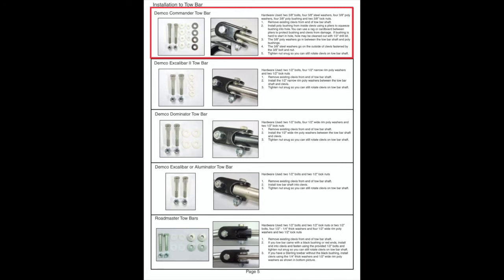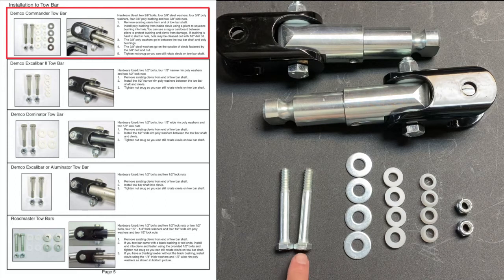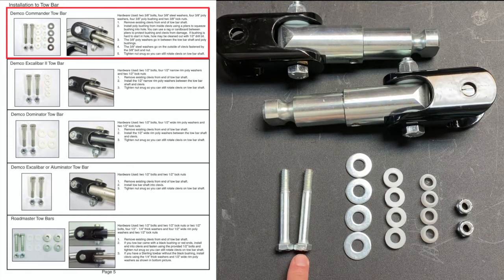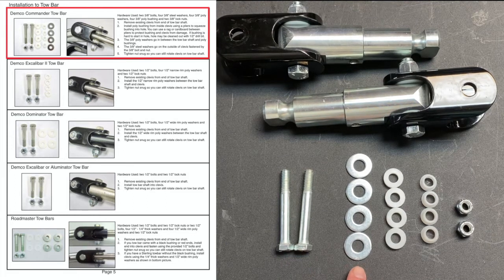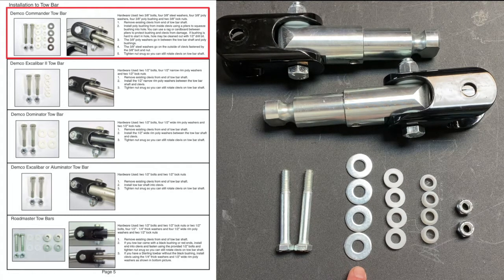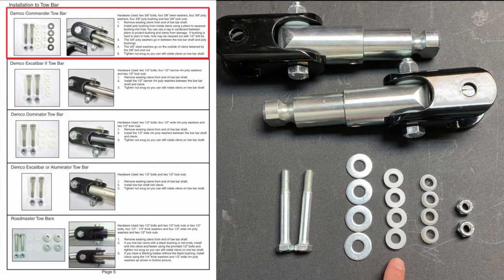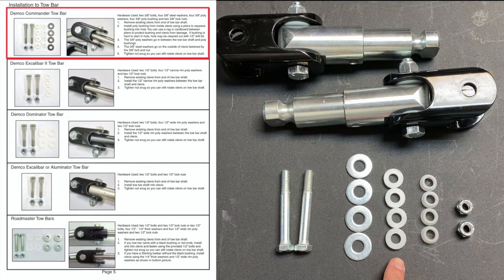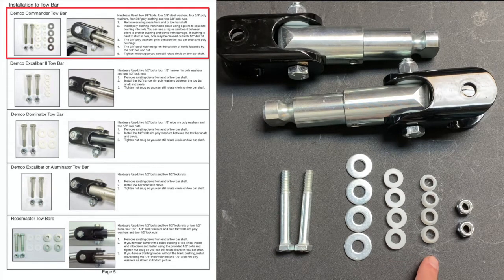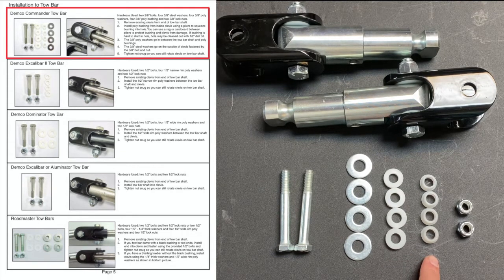Next you will need to locate the hardware needed to perform the swap. For the Commander 2 you will use two 3/8 inch bolts, four 3/8 inch steel washers, four 3/8 inch poly washers, four 3/8 inch poly bushings, and two 3/8 inch lock nuts.